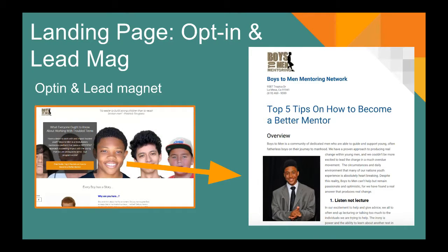With the Boyz II Men landing page, you can use what's called an opt-in and a lead magnet. Your landing pages should have this. Don't let personal feelings about subscribing get in the way — when the right mentor finds your ad on Google and comes to your landing page, the information will be really valuable and they'll want to subscribe. After someone subscribes, we immediately send them a great guide with top tips on how to become a better mentor — something very valuable. There's software and tools that make this easy for nonprofits, and I'll give you a heads-up on those in a few slides.